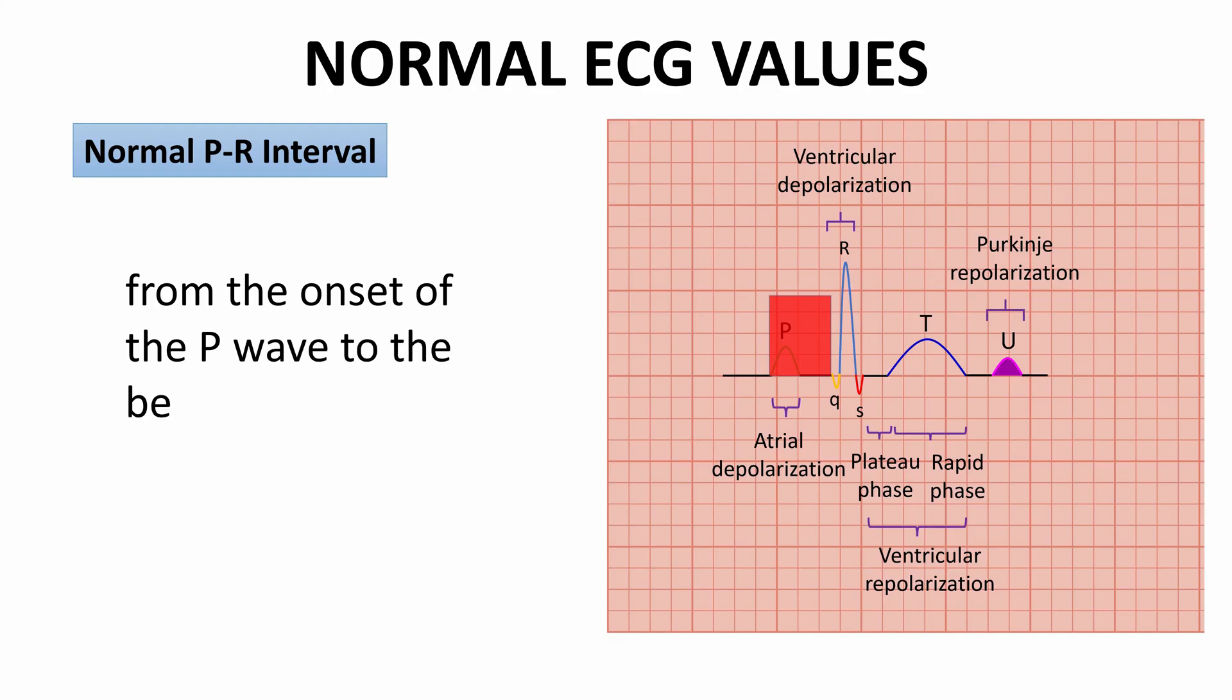The PR interval is measured on the horizontal axis from the onset of the P wave to the beginning of the QRS complex, irrespective of whether it begins with a Q wave or R wave.